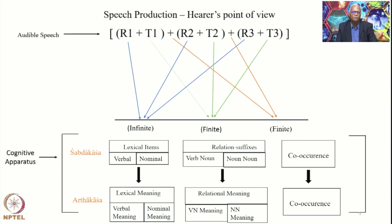This is how the hearer's point of view can be explained as far as the speech production process is concerned. The cognitive apparatus plays a very important role in this entire process, and as said earlier, the cognitive apparatus of the speaker is the main element — the audible speech is just an expression of the cognitive element in the cognitive apparatus of the speaker.